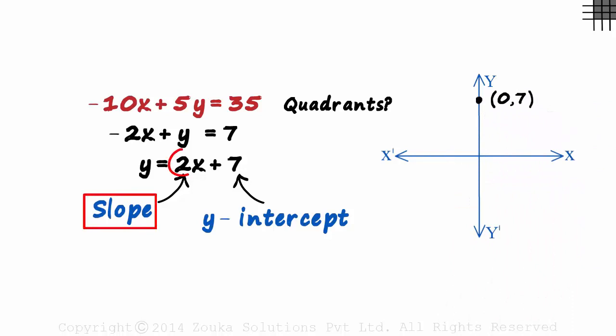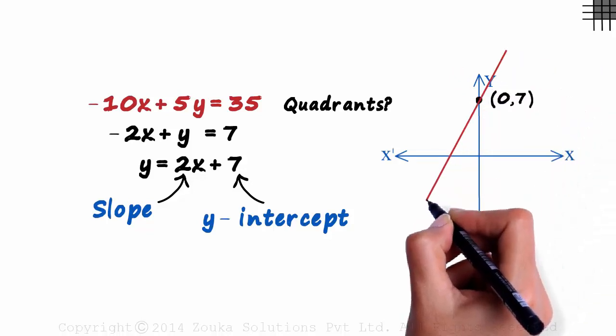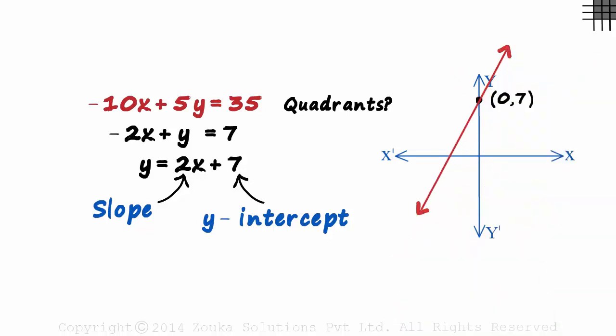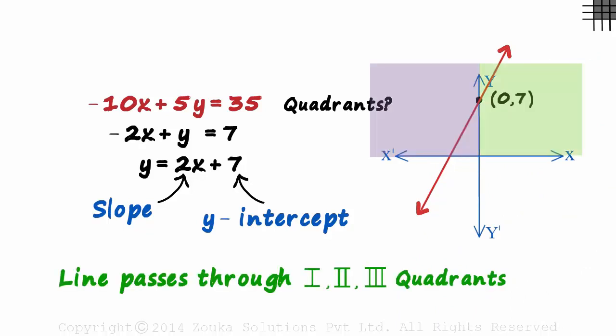The slope is positive. So the line cannot be like this or like this. These lines have a negative slope. It has to be tilted in the other way. It will look a bit like this. That's all. We can see that the line passes through the first, second, and third quadrant. We didn't really need to draw the exact line to get to the answer. The slope-intercept form was enough to tell us the quadrants through which the line passes.